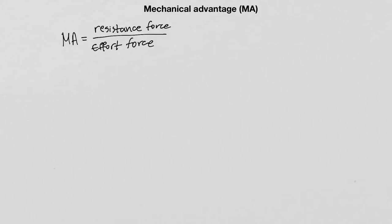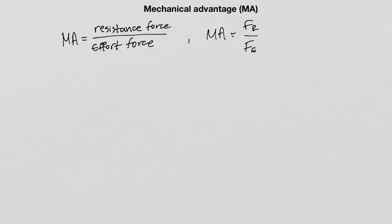Now let's define what the mechanical advantage, or MA, of a simple machine is. The mechanical advantage is defined as the ratio of the resistance force to the effort force — MA equals FR divided by FE. The effort force is always a small force, but because the simple machine multiplies effort, the resistance force will be larger than the effort force, which means the mechanical advantage will always be larger than 1. The mechanical advantage is just a coefficient — a multiplier — and it has no units because it is the ratio of two forces.